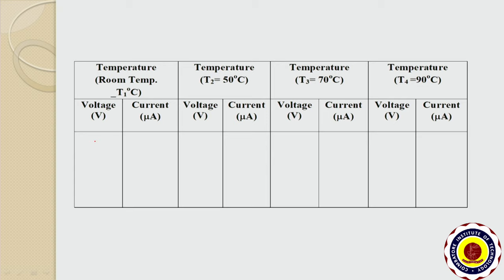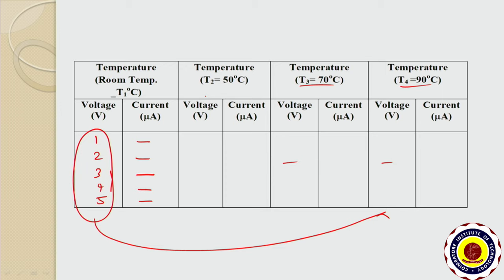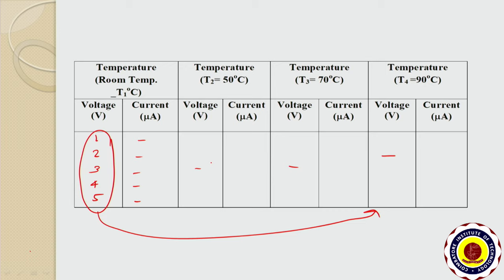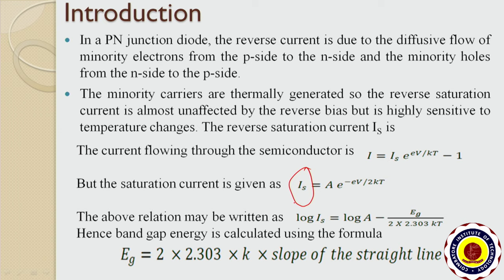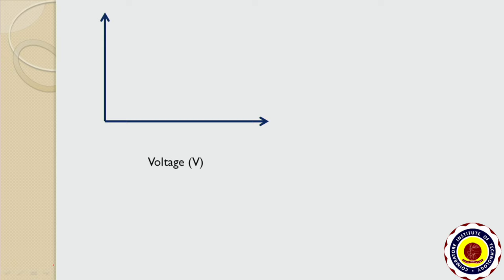For room temperature, note the current values at 1V, 2V, 3V, 4V, and 5V. The same set of readings is noted for 90°C, 70°C, and 50°C while cooling. From the table, you can observe that if we increase the voltage, the corresponding current values also increase for all temperatures. We need to find out the saturation current Is for each temperature. Plot the reverse bias voltage-current characteristics with voltage on the x-axis and current on the y-axis.